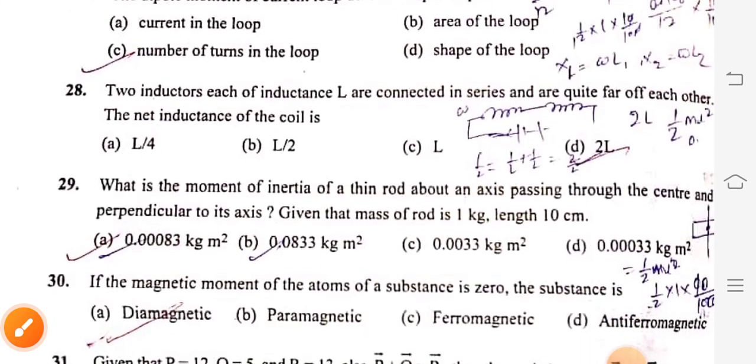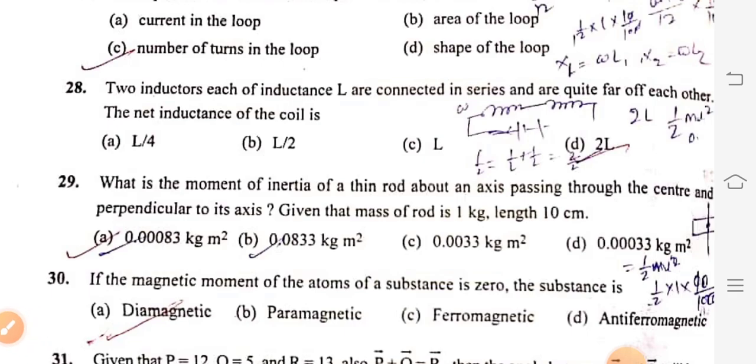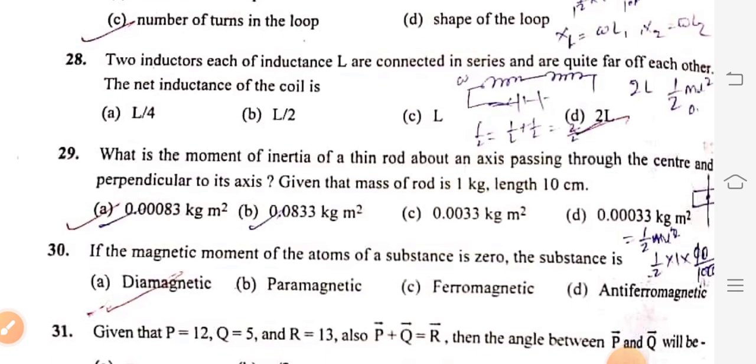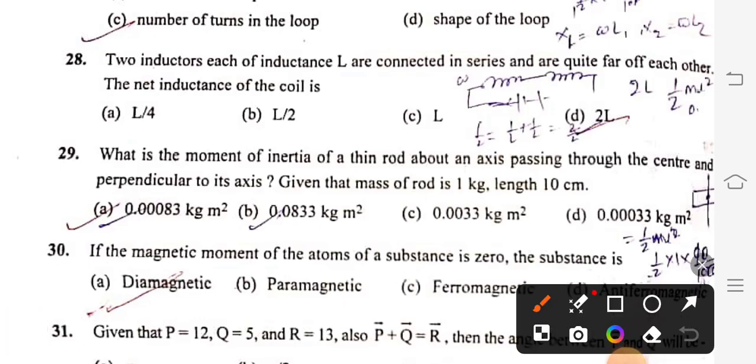Question 28: Two inductors each of inductance L are connected in series and are quite far off each other, the net inductance of the coil is option D, 2L.